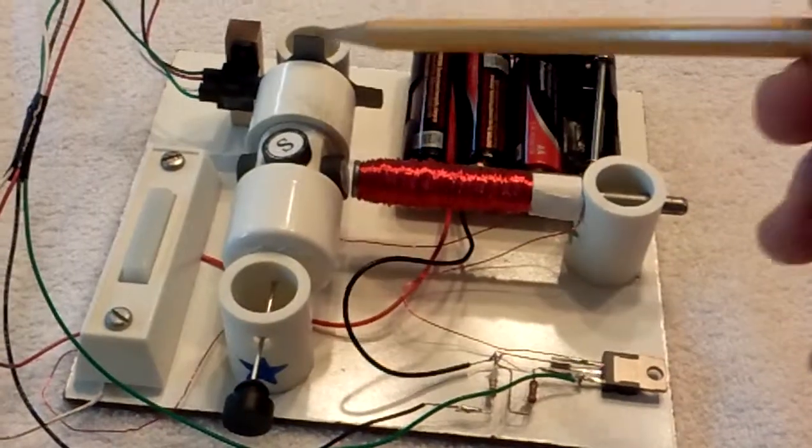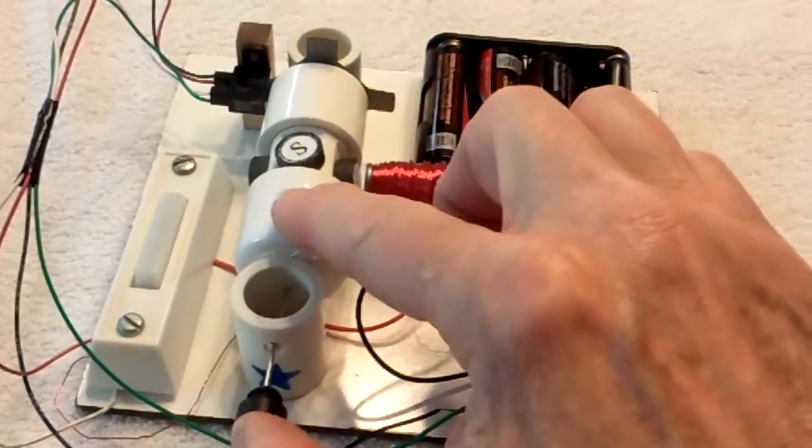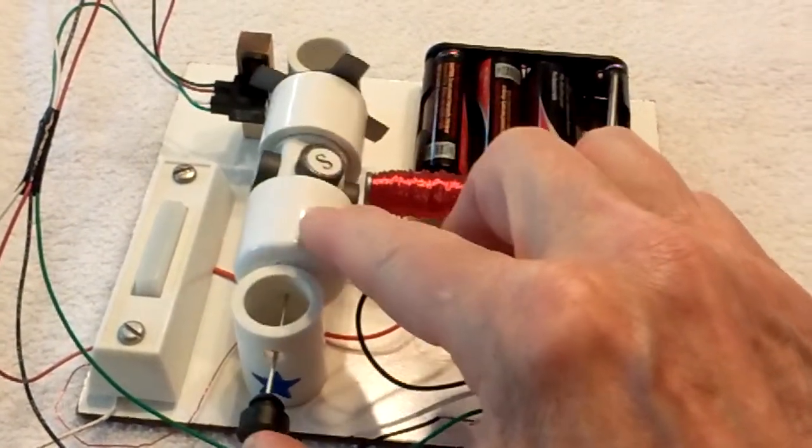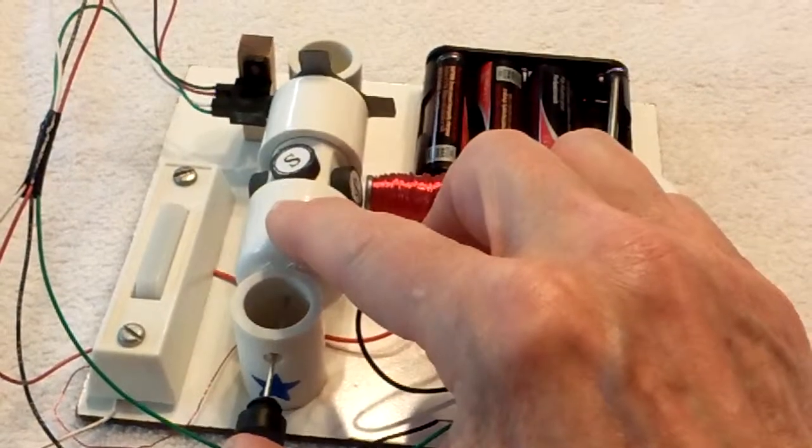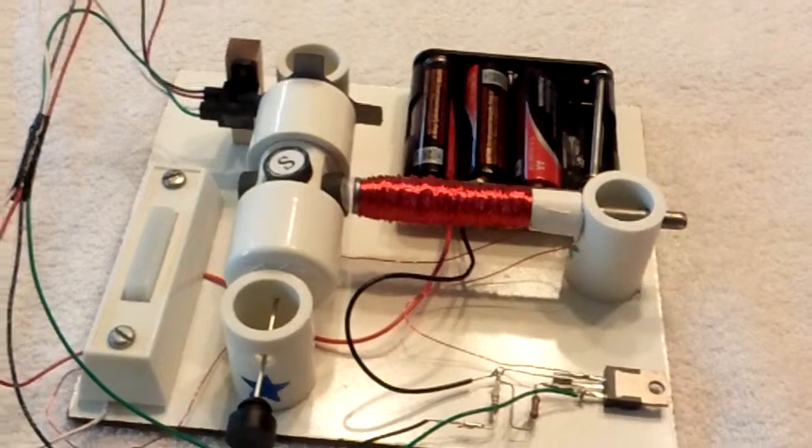When it first starts, over here, the opto-interrupter circuit shows that these blades are actually between the LED and the phototransistor. Well, to get this thing going, you press the push button that I have installed,